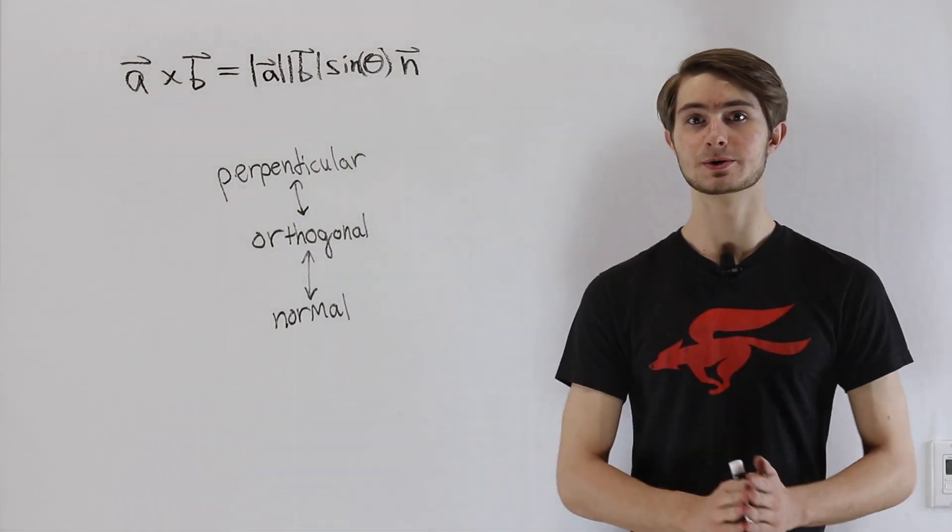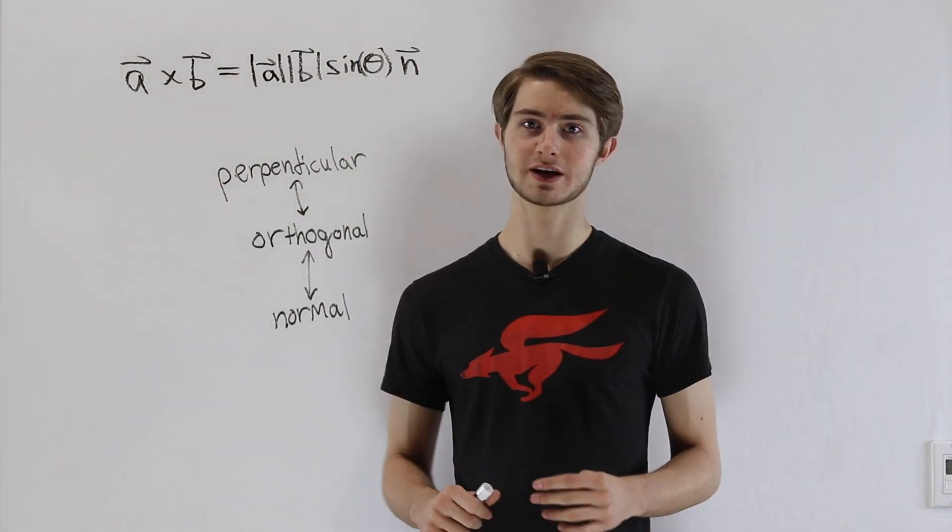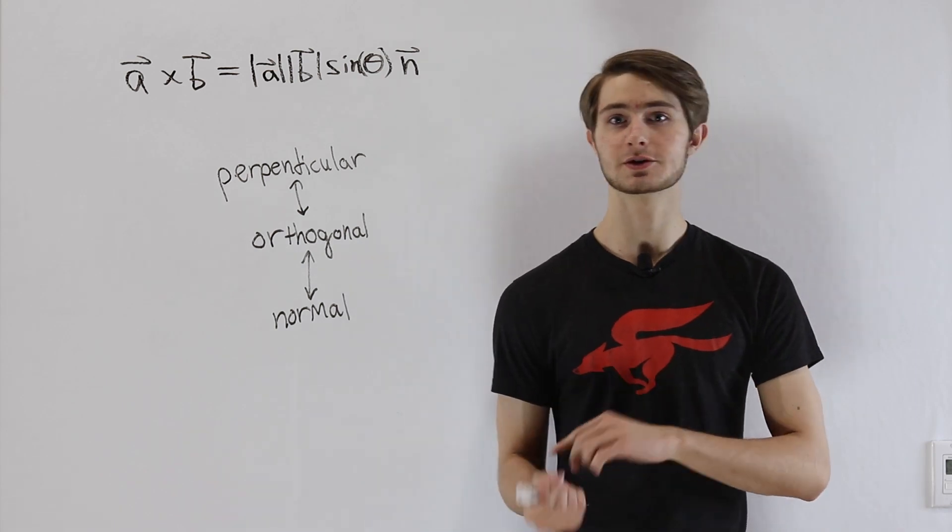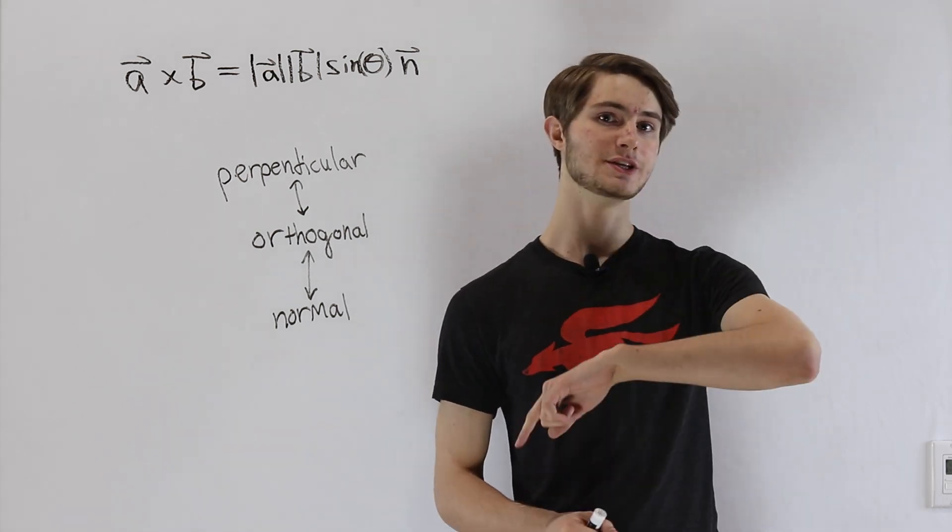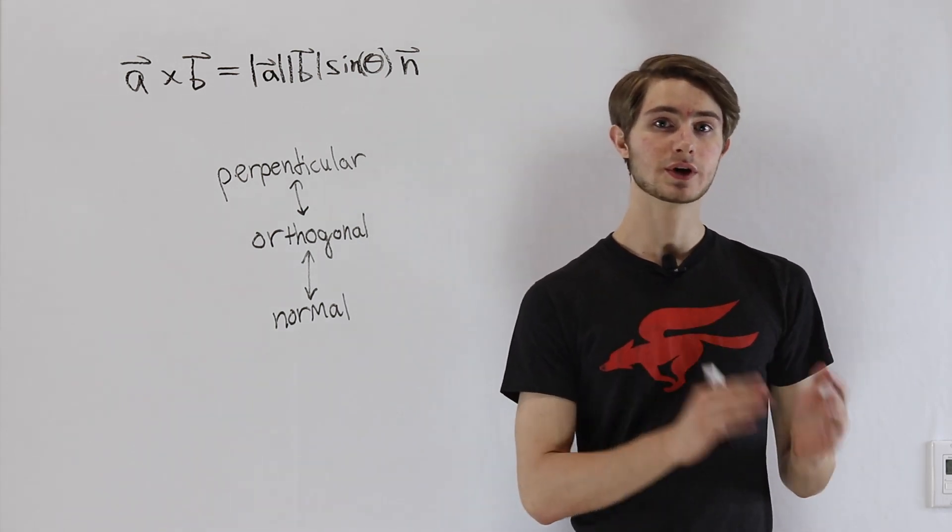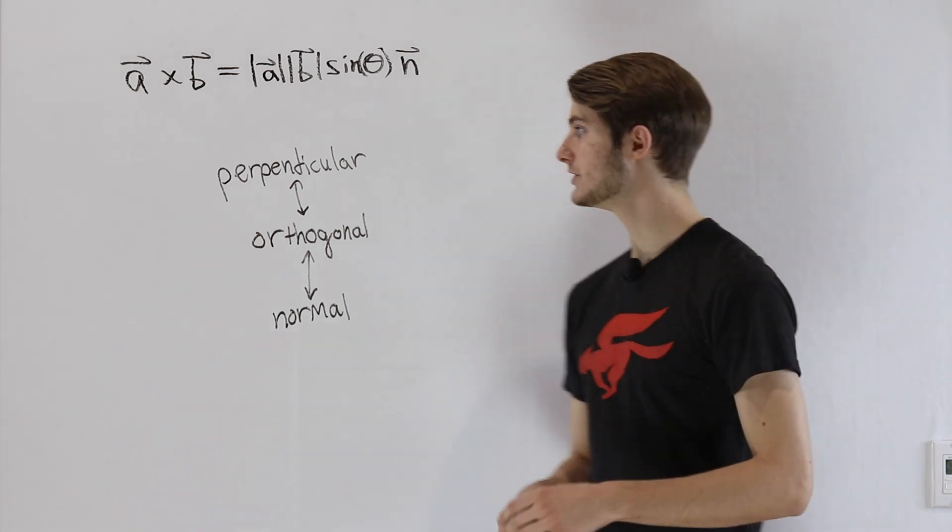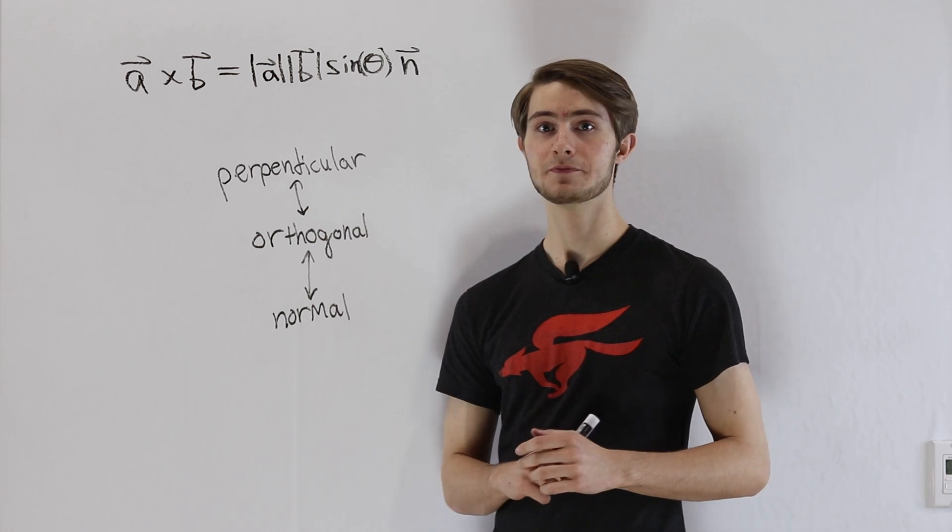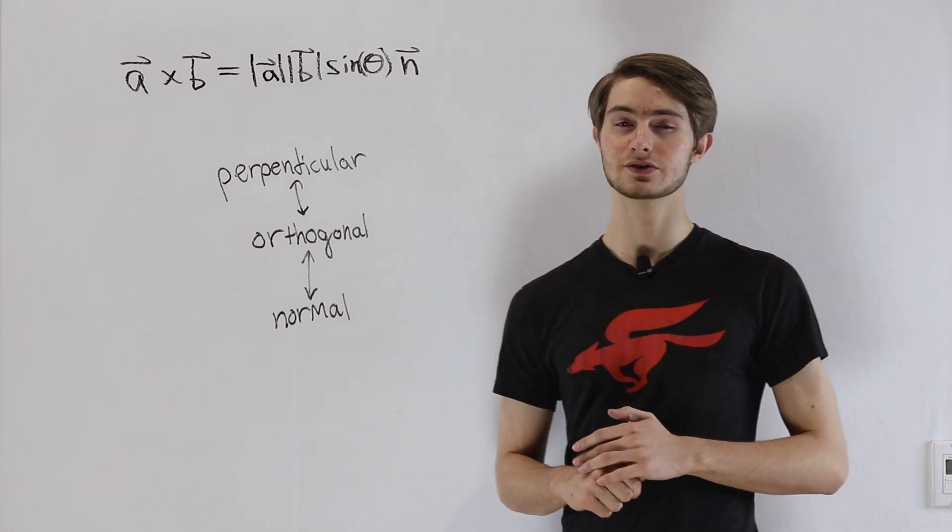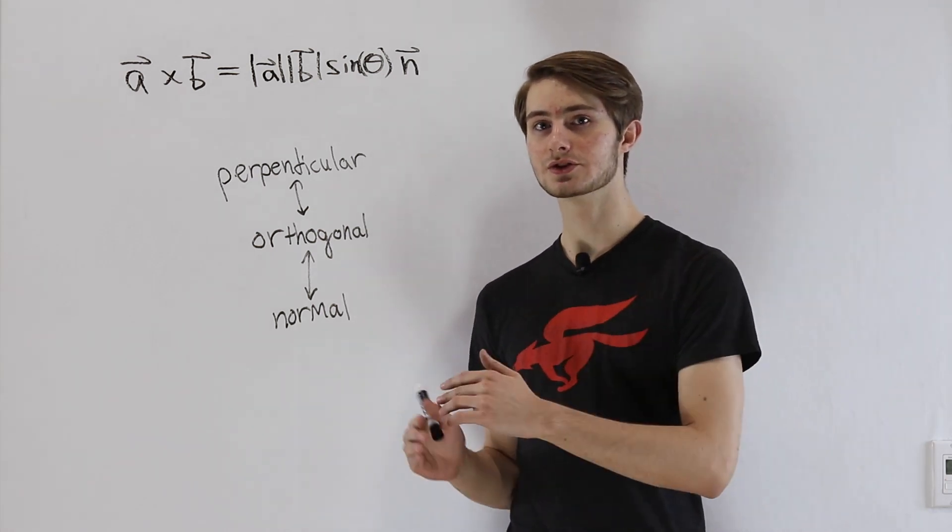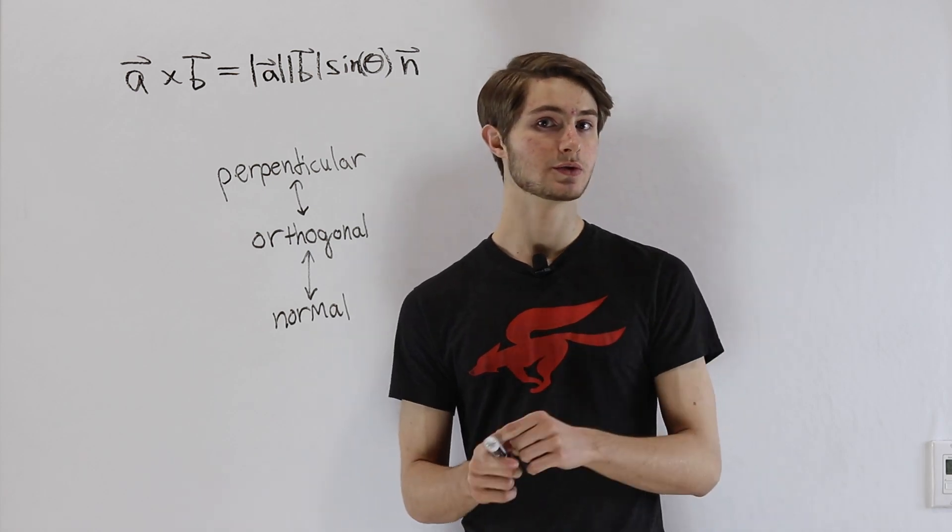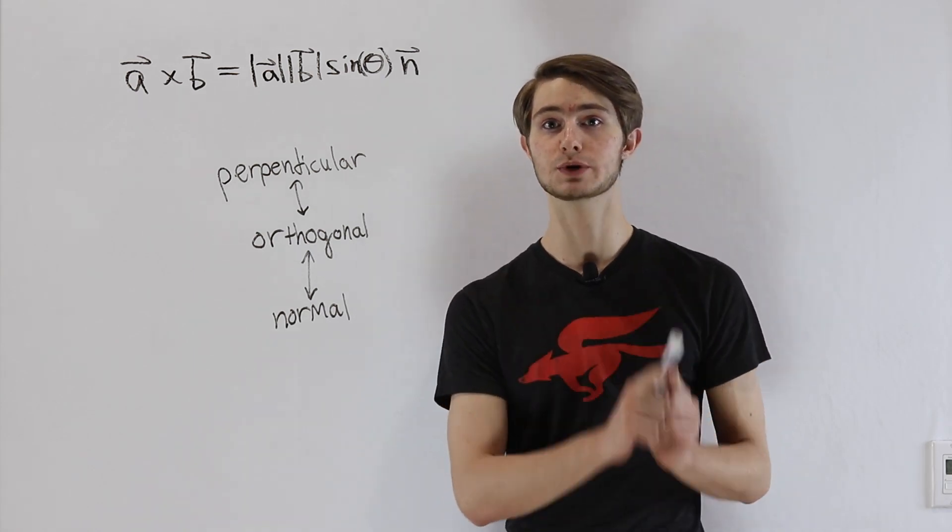So we are going to learn about the cross product for two three-dimensional vectors. Now previously we talked about the dot product, you can check that video in the description, and one of the reasons the dot product was useful is it let us determine whether two vectors are orthogonal. But one question you might have is, what if we have two vectors already and we want another one that's orthogonal to both of them?